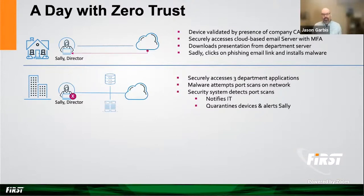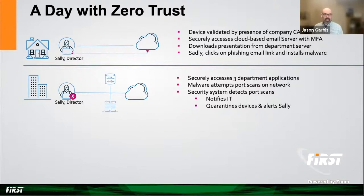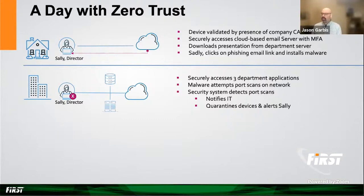What happens is the zero trust system recognizes that she has roamed and is now on a different network. It goes through further validation behind the scenes and says everything's still good with the device — she can access her department applications and do her job. But the malware also wakes up and attempts to do some port scans across the network. Because this is a zero trust system and everything operates in a default-deny mode, first of all those port scans are blocked, and second, they are detected very easily because there's much less noise in the system. So the security system flags this as unauthorized, notifies IT, notifies the SOC, and can — either in an automated or manual fashion — quarantine her device, because something is attempting to do things that Sally never does.